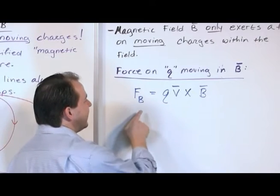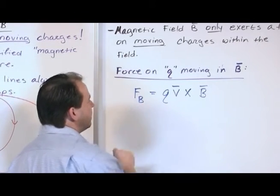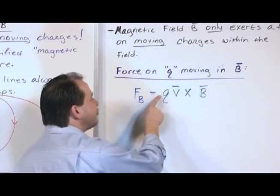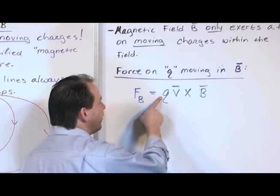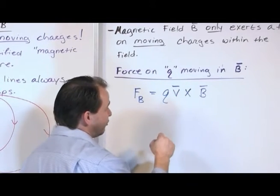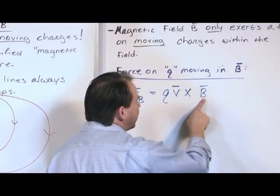What we're basically saying is that the force due to this magnetic field depends, forget about the cross product, it depends on the strength and the sign of the charge that's moving in the field. It depends on the velocity of the charge, and it depends on the magnetic field.